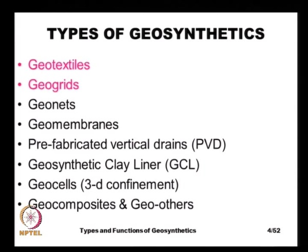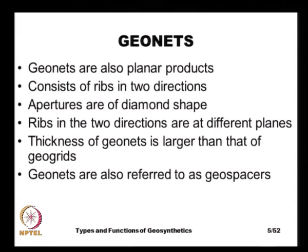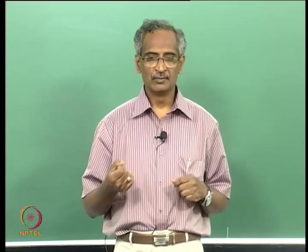Geonets are also planar products, very similar to geogrids, and they also consist of ribs in two directions. But their aperture openings are not square or rectangular in shape — they are more of diamond-shaped. Another major difference between a geonet and a geogrid is that the ribs in the two directions are in two different planes.